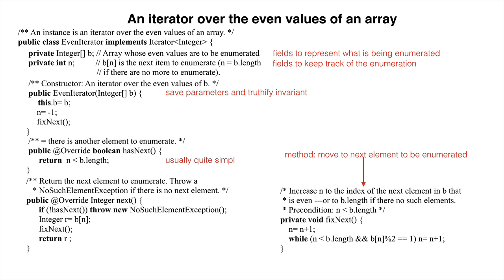Method hasNext usually has a simple body. Finally, method next always makes sure that there is an element to enumerate. It then saves the return value, fixes the fields to describe the next element to be returned, and returns the saved value.